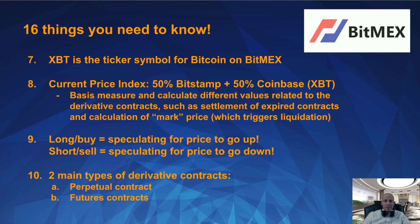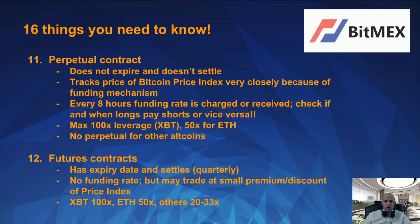If you use long buy, this is speculating for the price to go up, and if you short sell, then you are speculating for the price to go down. BitMEX has two main types of derivative contracts: perpetual contracts and futures contracts. The perpetual contract does not expire and does not settle. It tracks the Bitcoin price index very closely because of its funding mechanism. Every eight hours a funding rate is charged or received depending on whether you are long or short — you can check that in the contract details. The maximum leverage is 100x for Bitcoin and 50x for Ethereum, and there is no perpetual contract for the other altcoins, at least not at time of recording.